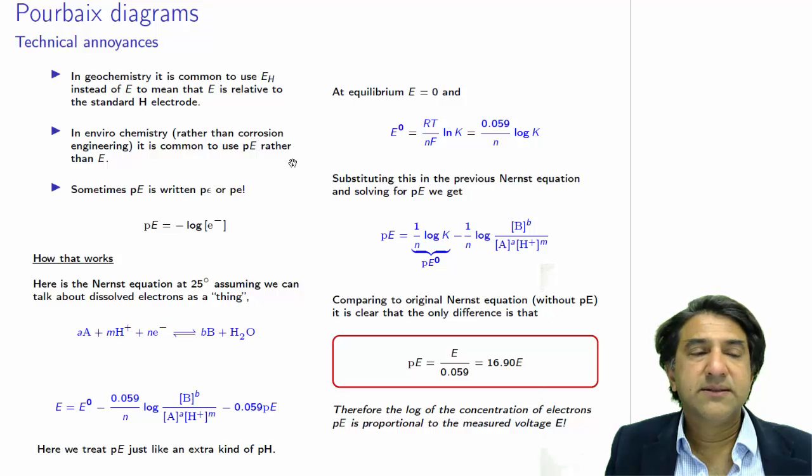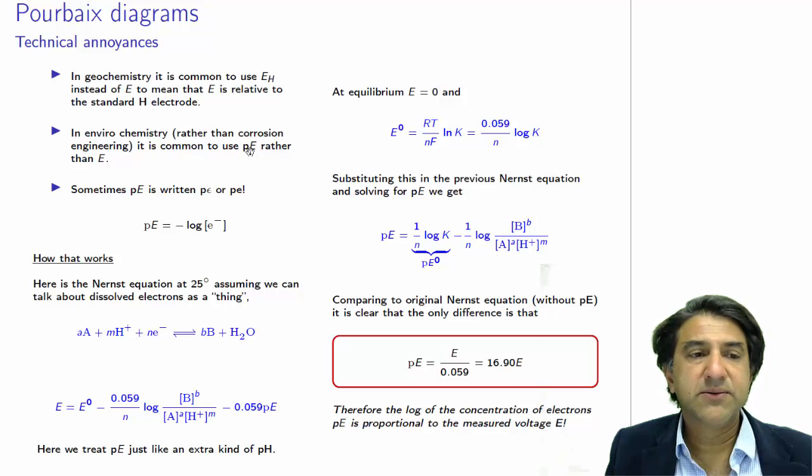The most annoying thing used is PE. In environmental chemistry, it's quite common to use PE rather than E. Now, what is PE? PE sometimes is written P epsilon or P little e, is the negative log of the concentration of the electrons.